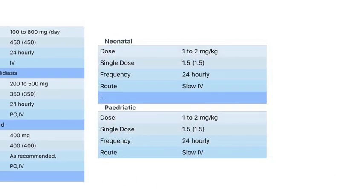Neonatal dose: 1 to 2 milligrams per kilogram, single dose 1.5 milligrams, frequency 24 hourly, route slow IV. Pediatric dose: 1 to 2 milligrams per kilogram, single dose 1.5 milligrams, frequency 24 hourly, route slow IV.